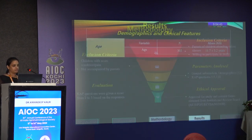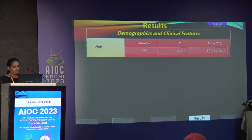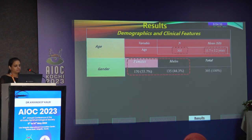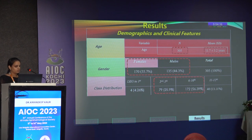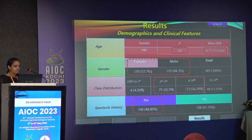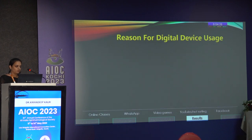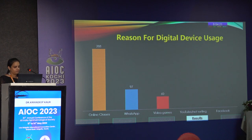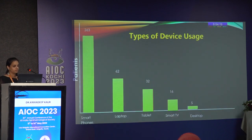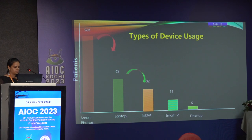Prior ethical approval was obtained from the IRB. We included 305 parents with almost equal gender representation. Most students belonged to standard 6 to 10. History of spectacle wear was present in 49% of the study population. The most common reason for digital device usage was online classes, followed by WhatsApp, video games, YouTube and Facebook. The most common device used among children was the smartphone, followed by laptops and tablets.